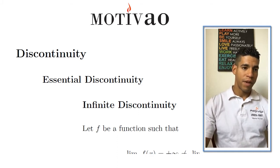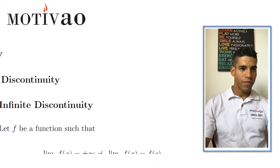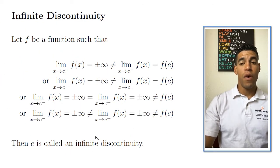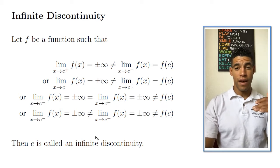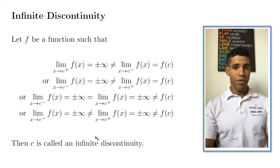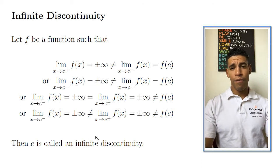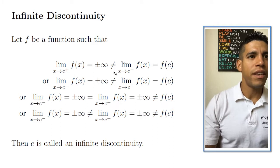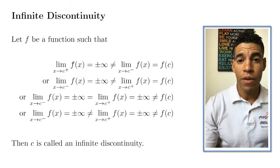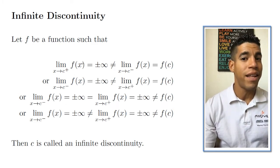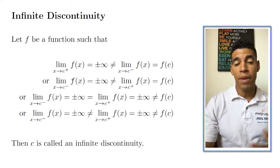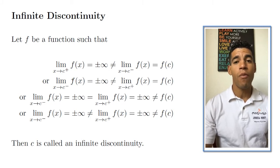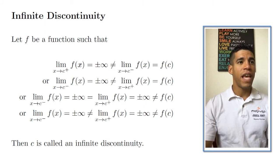Similar to the previous video, I'm going to give the definition first. Let f be a function such that — notice that we have four conditions now. For jump discontinuity it was only three, but for infinite discontinuity it's four. In the previous video we had less than infinity, meaning finite — a constant — but now we're going to work with infinity.